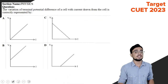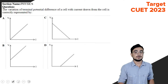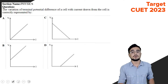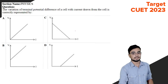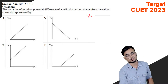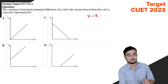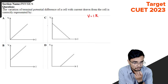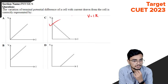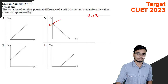The variation of terminal potential difference of a cell with current drawn from the cell is correctly represented by V equals IR. The correct answer is option C.